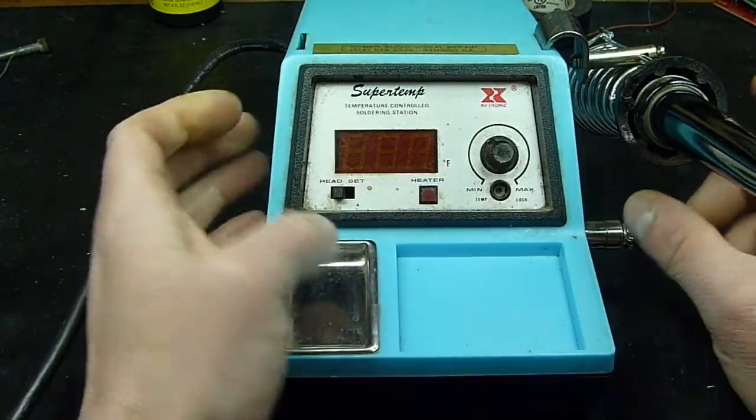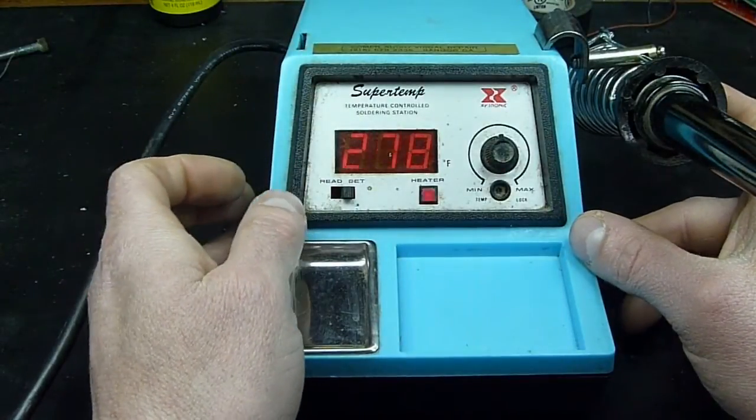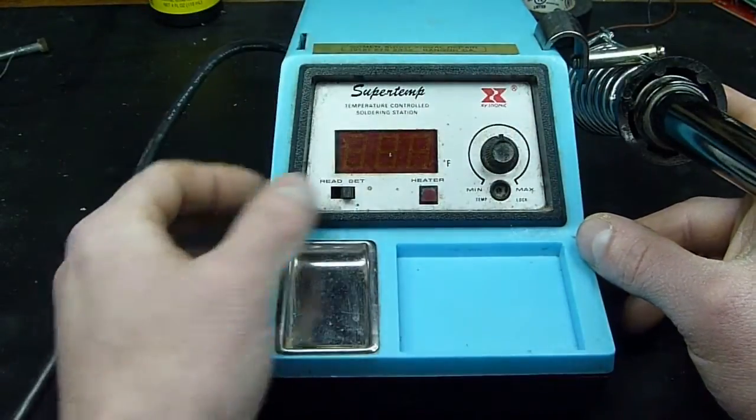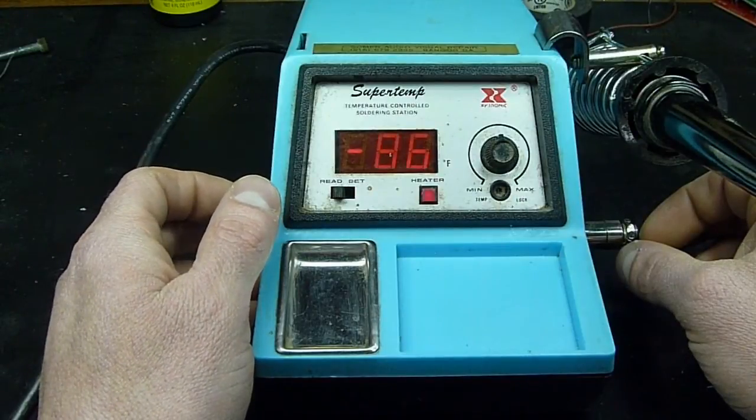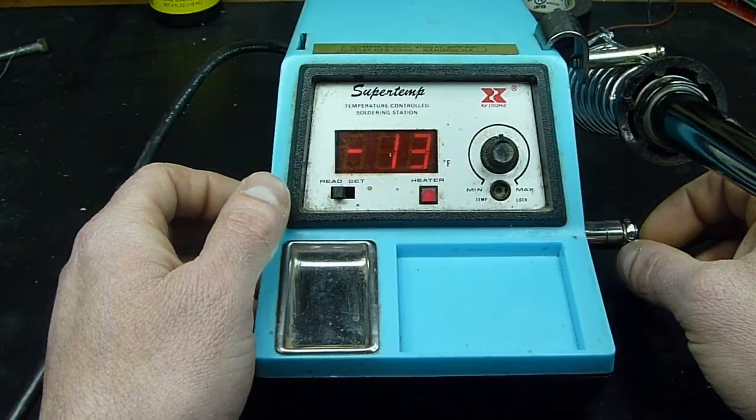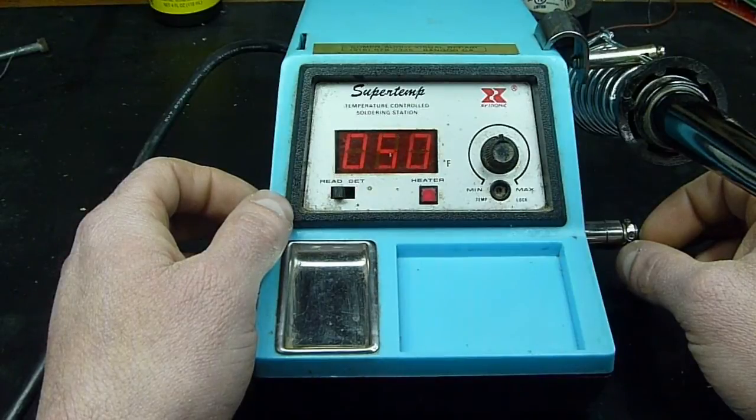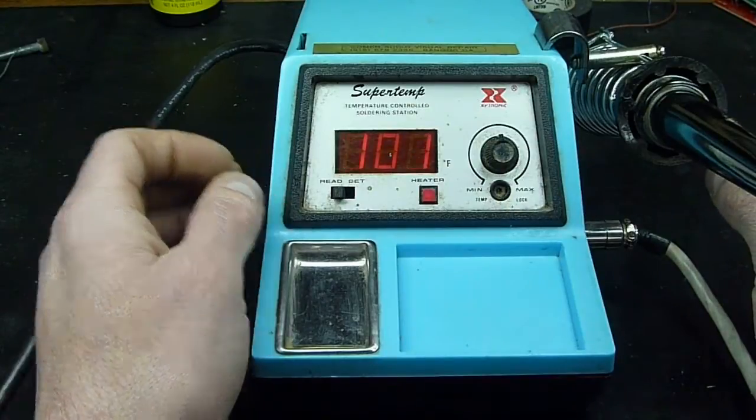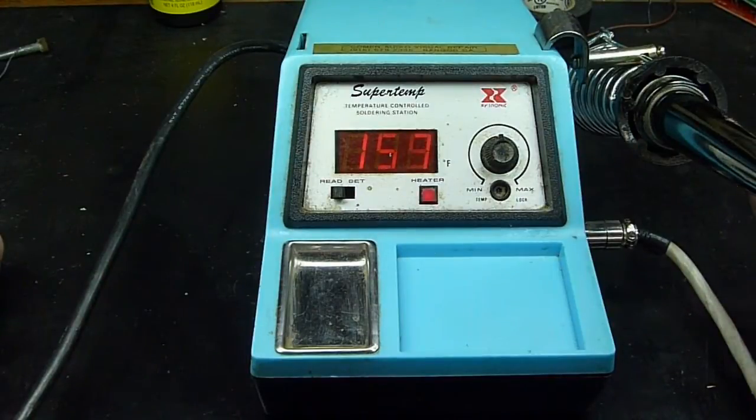It does heat up pretty fast. We'll just set it on here. Set temperature is 317 degrees, so we'll put on Read and fire it up. Why it shows negative I'm not sure, probably just below the range of the electronics in here, but it does heat up fairly quickly.